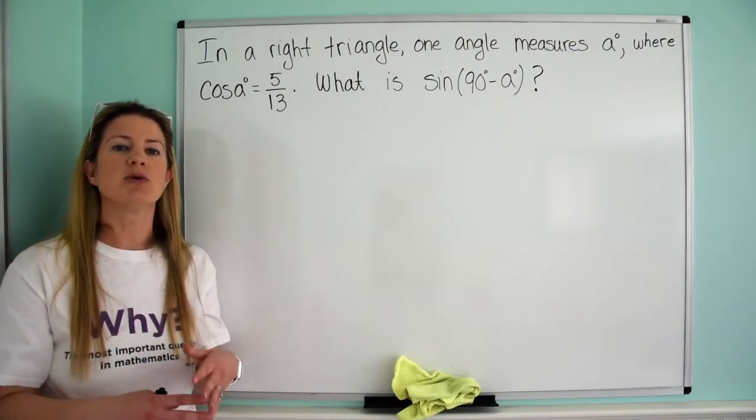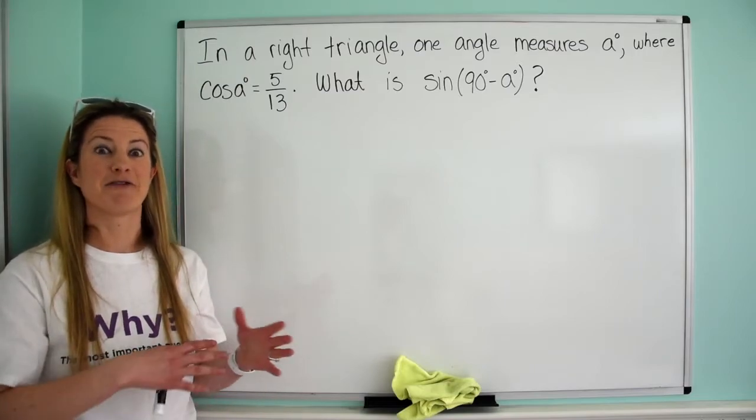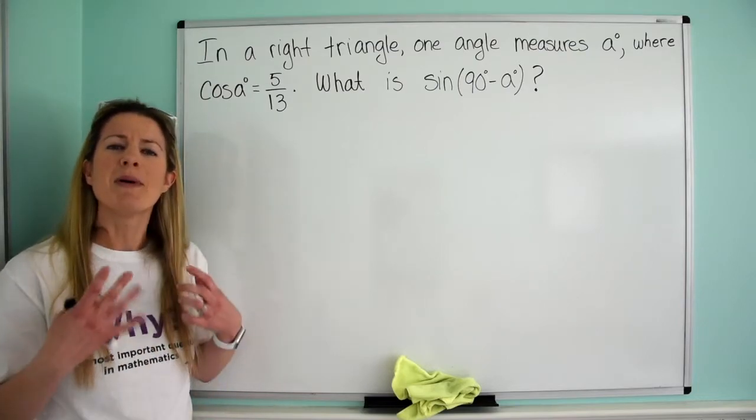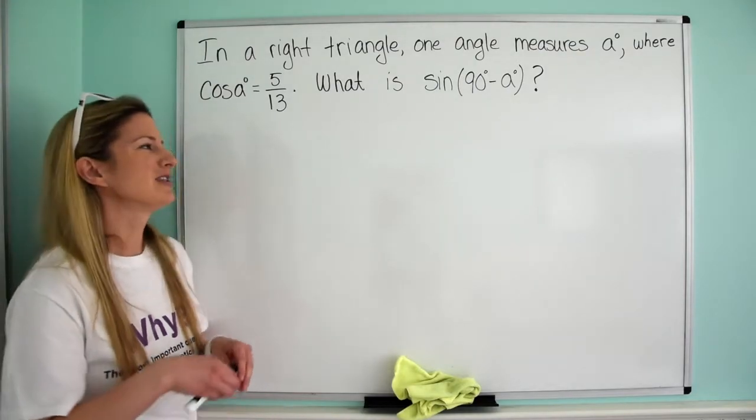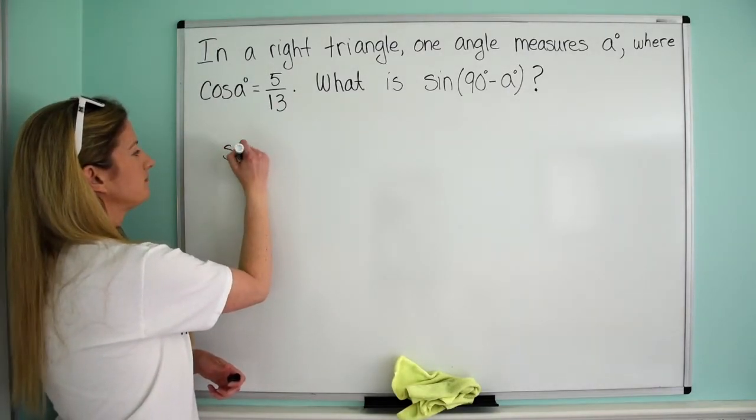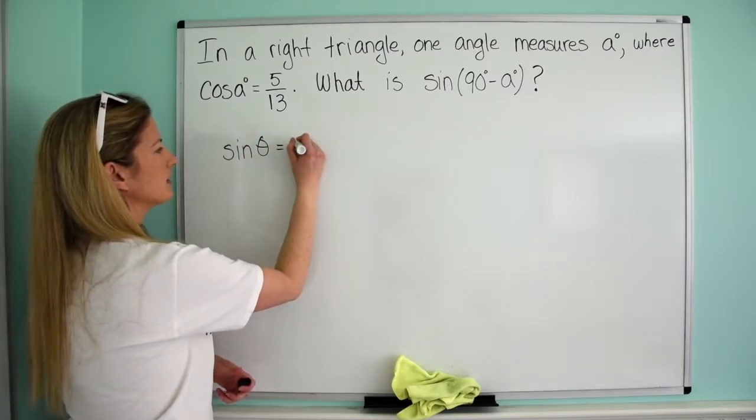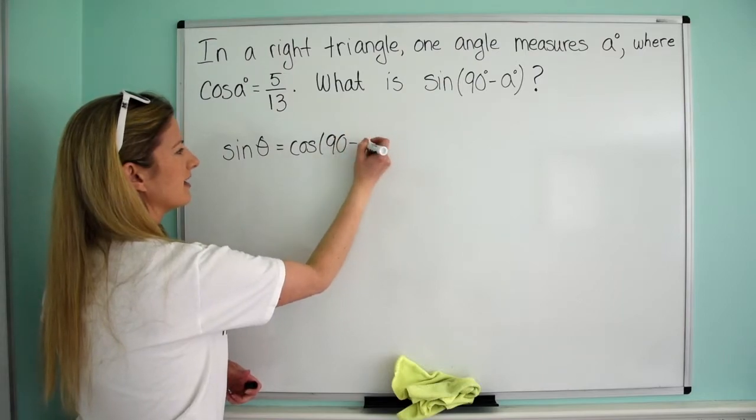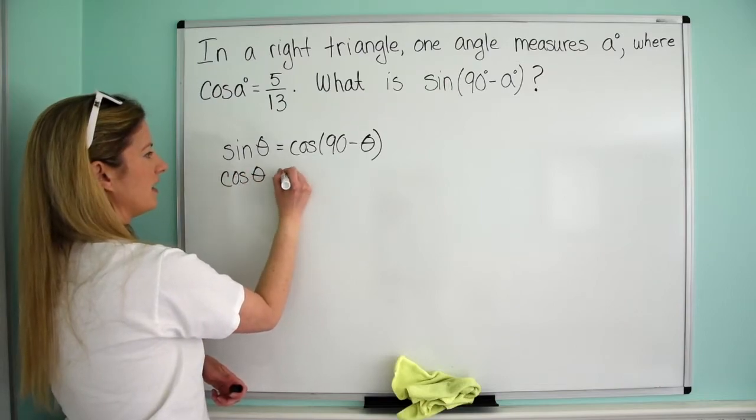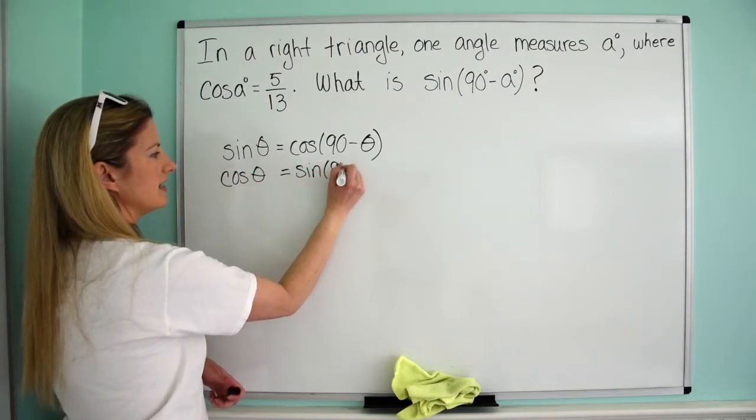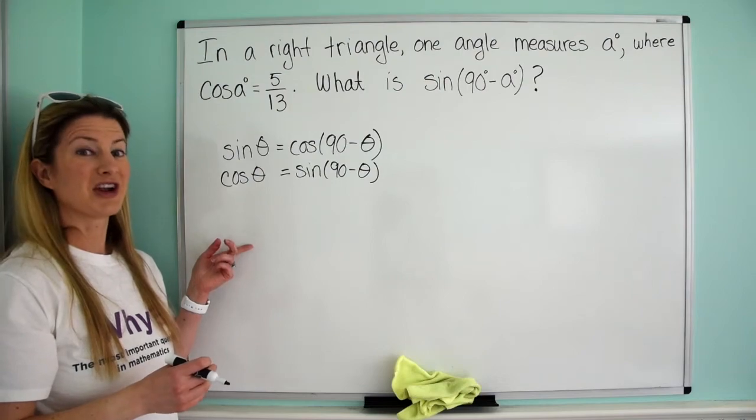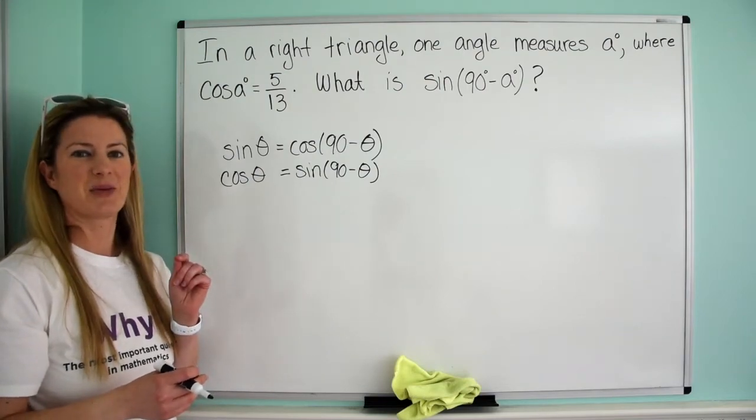What I want you to do is think about when you were in pre-calc trig or whatever that class is called, whatever the class after Algebra 2 is called. Remember your co-function identities? So let's think about what the co-function identities were. The sine of theta equals the cosine of 90 minus theta, and the other popular one is the cosine of theta equals the sine of 90 minus theta.